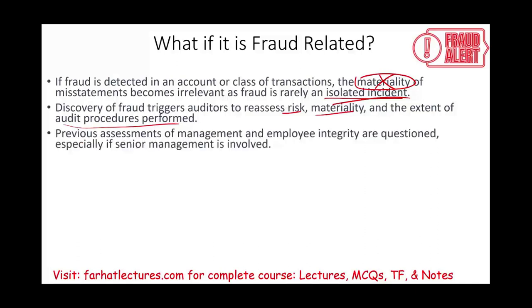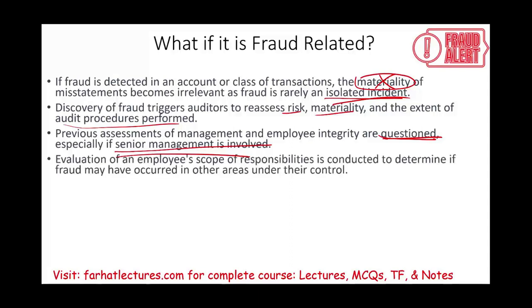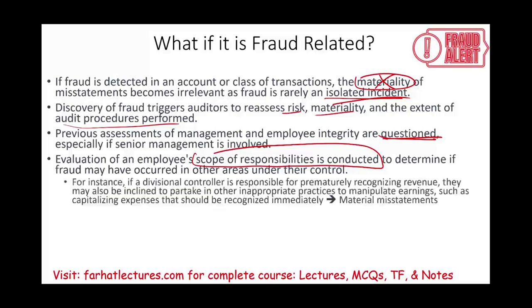Previous assessments of management and employee integrity are now questioned and reviewed, especially if senior management is involved. Evaluation of employees' scope of responsibilities is conducted — because if people at the top are involved, they may have many areas under their control and more room to commit fraud. For instance, if a divisional controller is responsible for prematurely recognizing revenue, there is a good chance they are committing fraud in one area while having the opportunity to commit fraud in others.